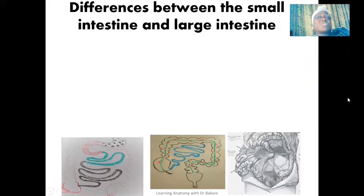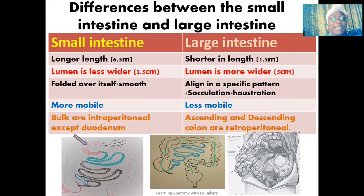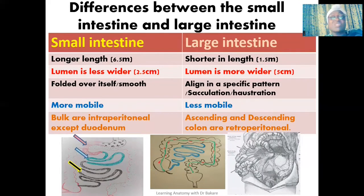Looking at the structural configuration, the small intestine is divided into three sub-regions: the duodenum highlighted in red, the jejunum highlighted in green, and the ileum highlighted in black. So these are the three sub-regions of the small intestine.